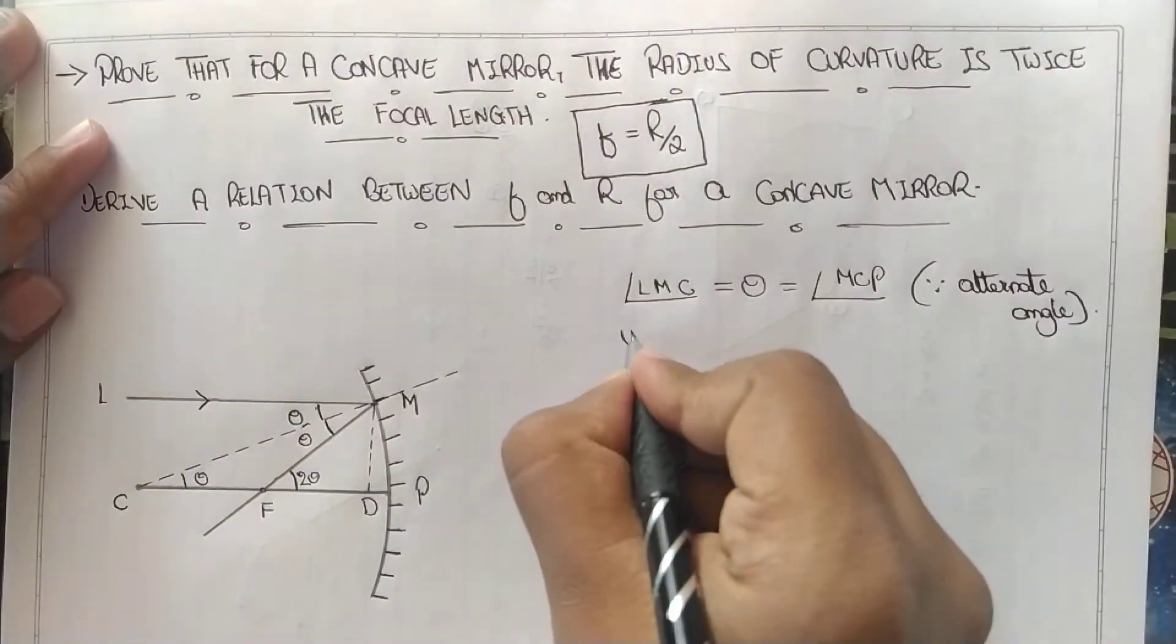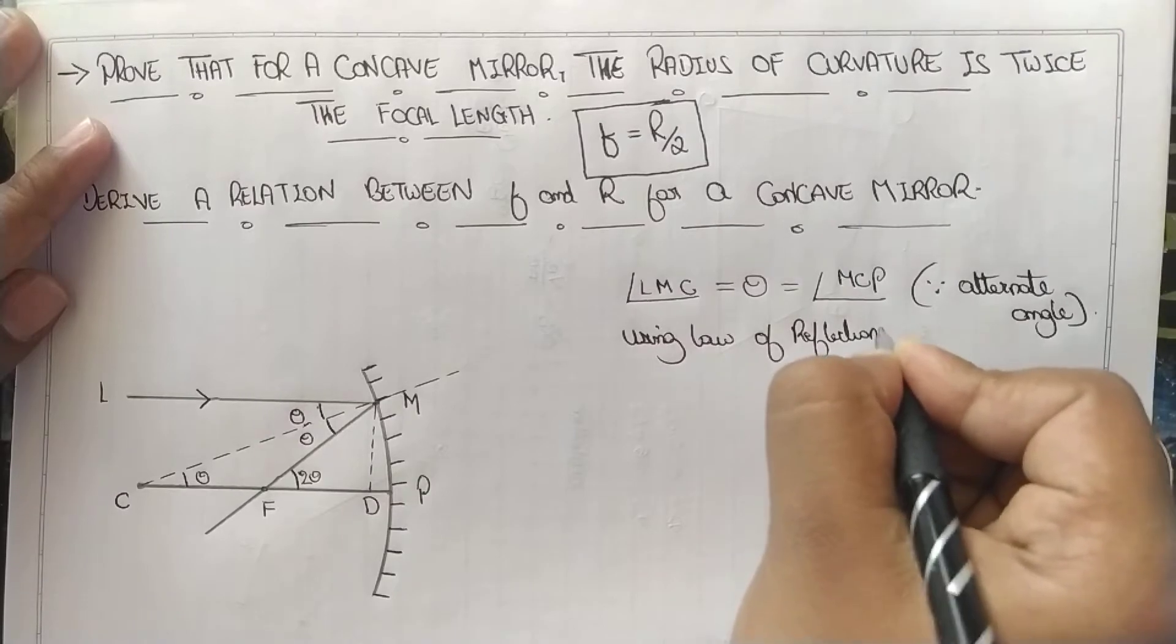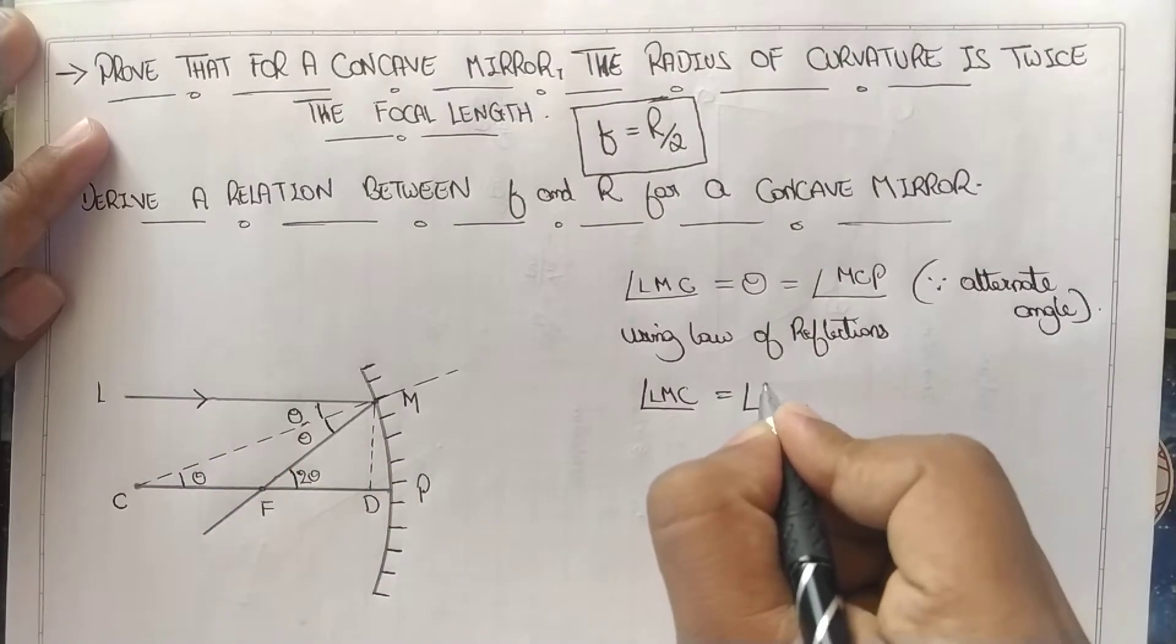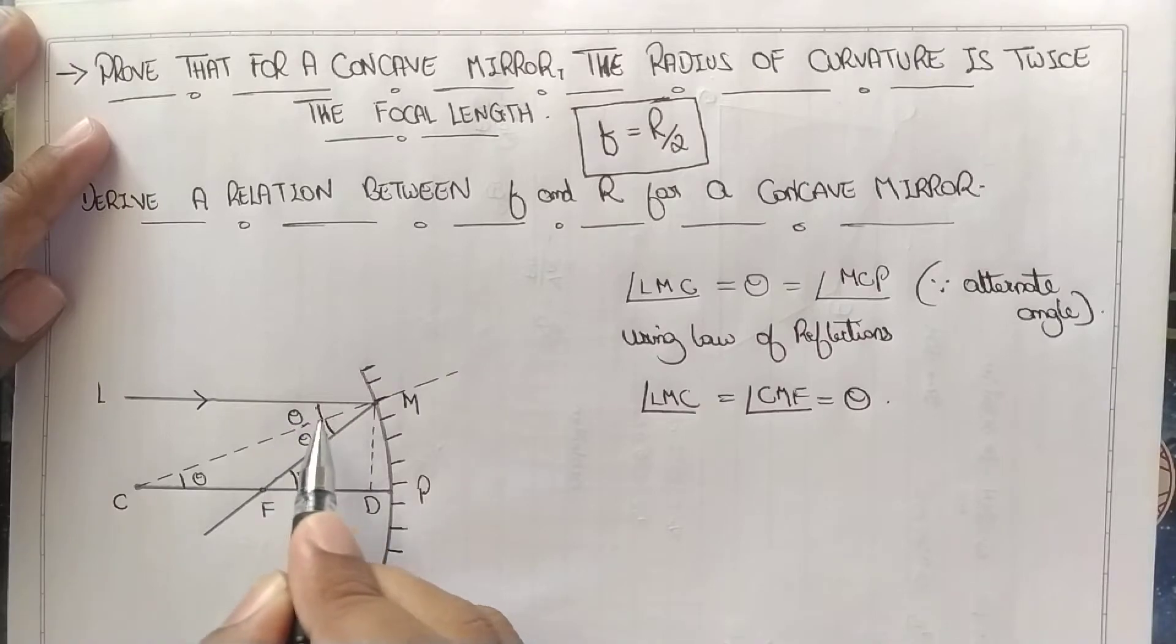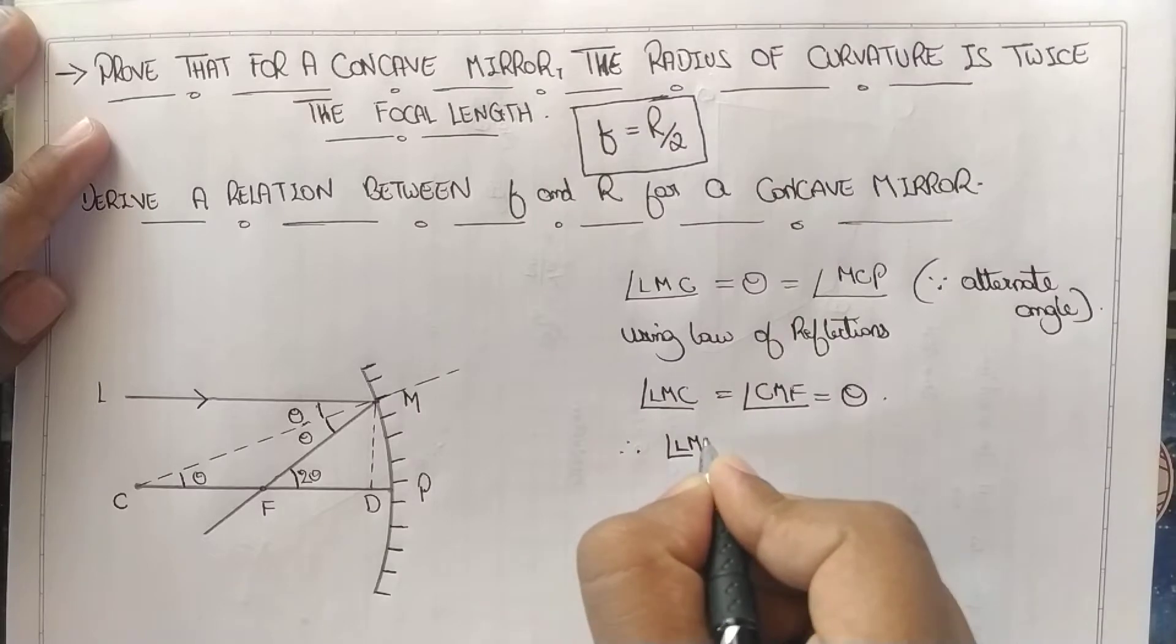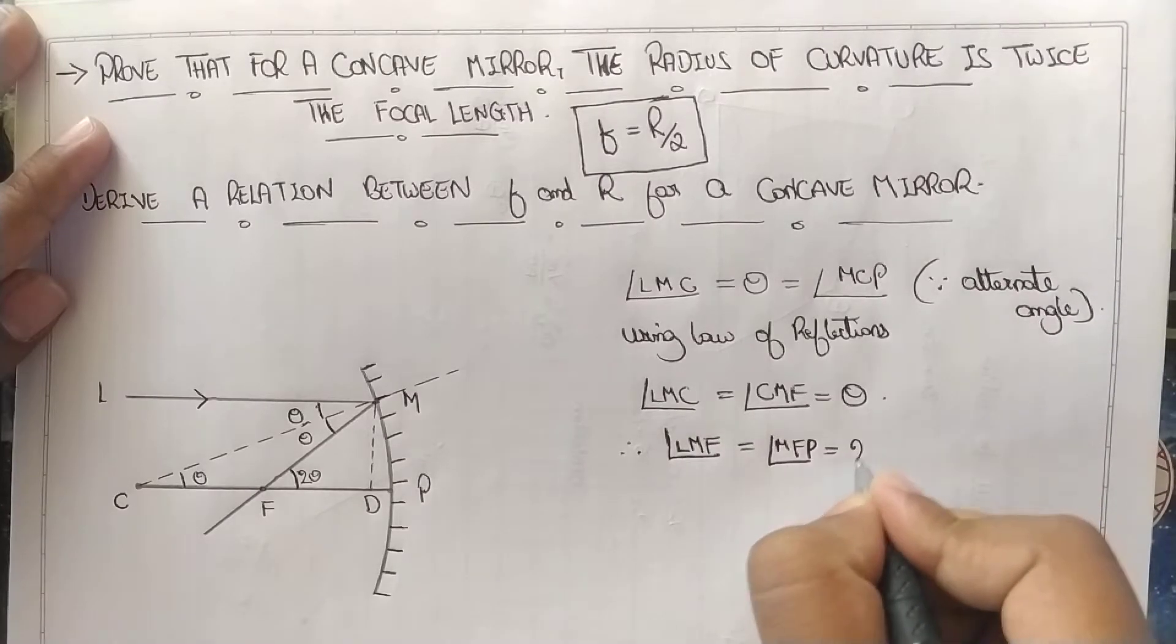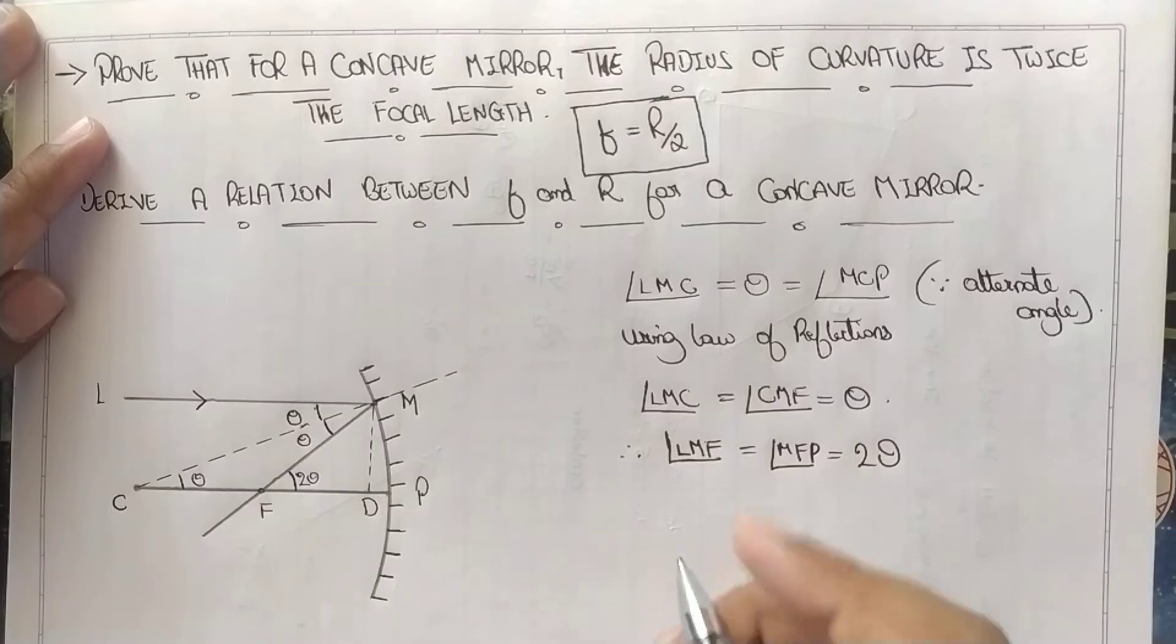Now using the law of reflection, LMC theta is also equal to CMF equals theta. The angle between the incident ray and the normal is theta, then the angle between the normal and the reflected ray is the same. So theta and here also theta, and this becomes two theta on adding. Therefore, LMF equals MFP equals two theta. The reason is they are alternate angles.